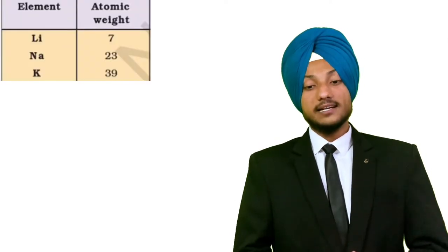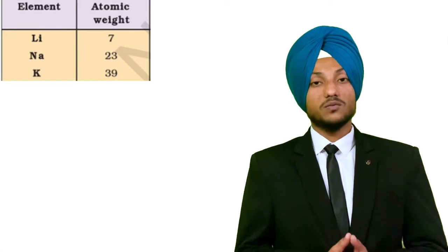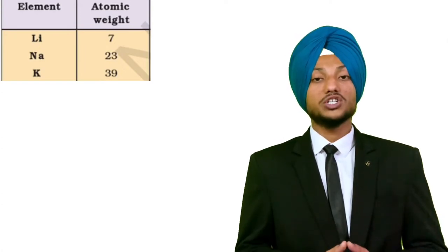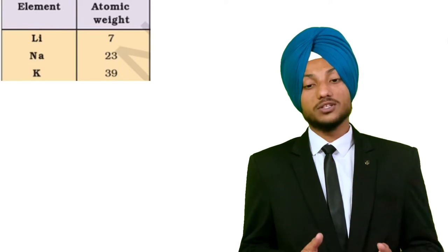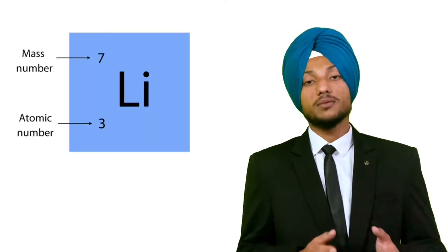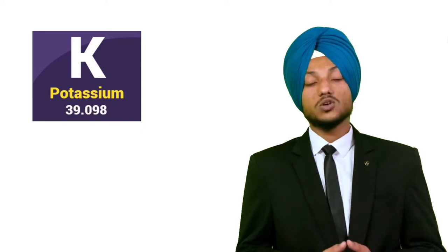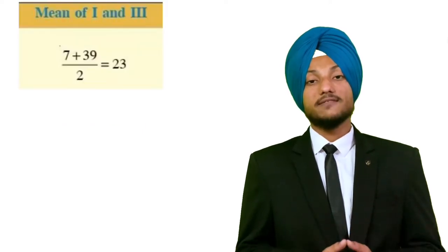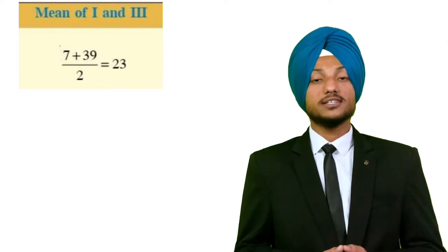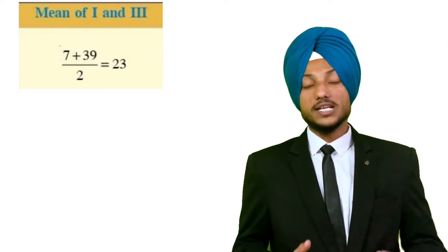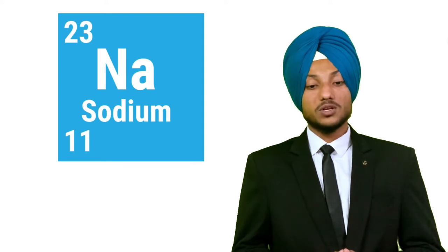Due to their similar chemical properties, lithium, sodium, and potassium were put in one group called the alkali metal group and form a Dobereiner's Triad. Lithium is the first element, sodium is the middle element, and potassium is the third. The atomic mass of lithium is 7 and of potassium is 39. The arithmetic mean is (7 + 39) / 2 = 46 / 2 = 23, which equals the atomic mass of sodium.